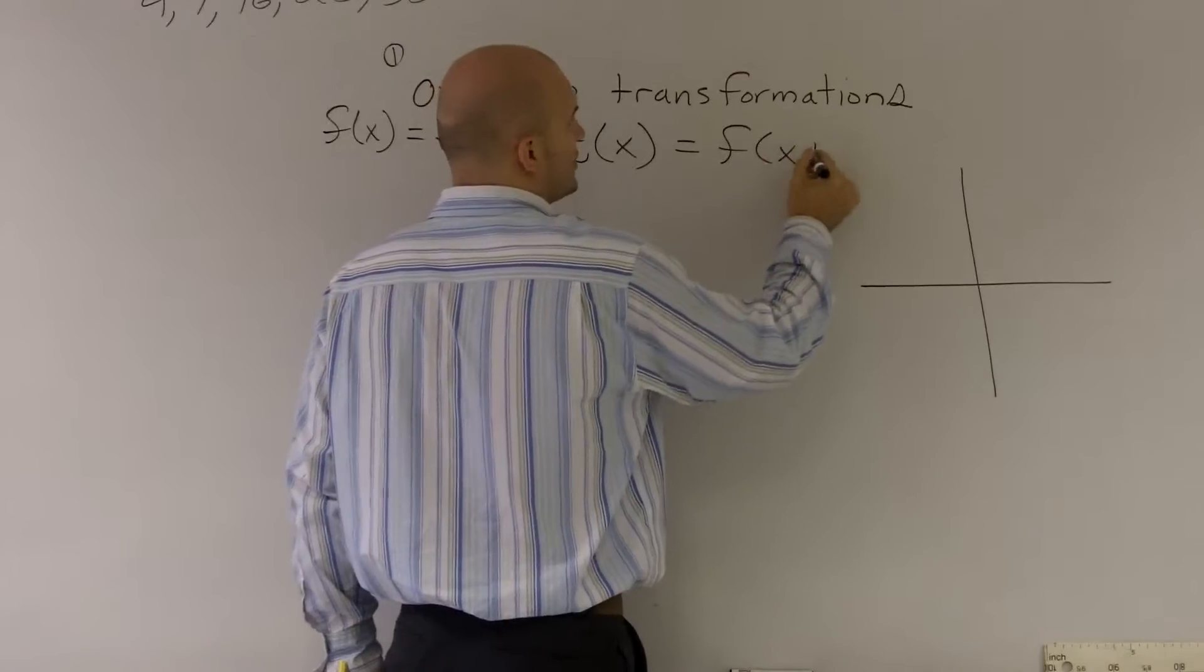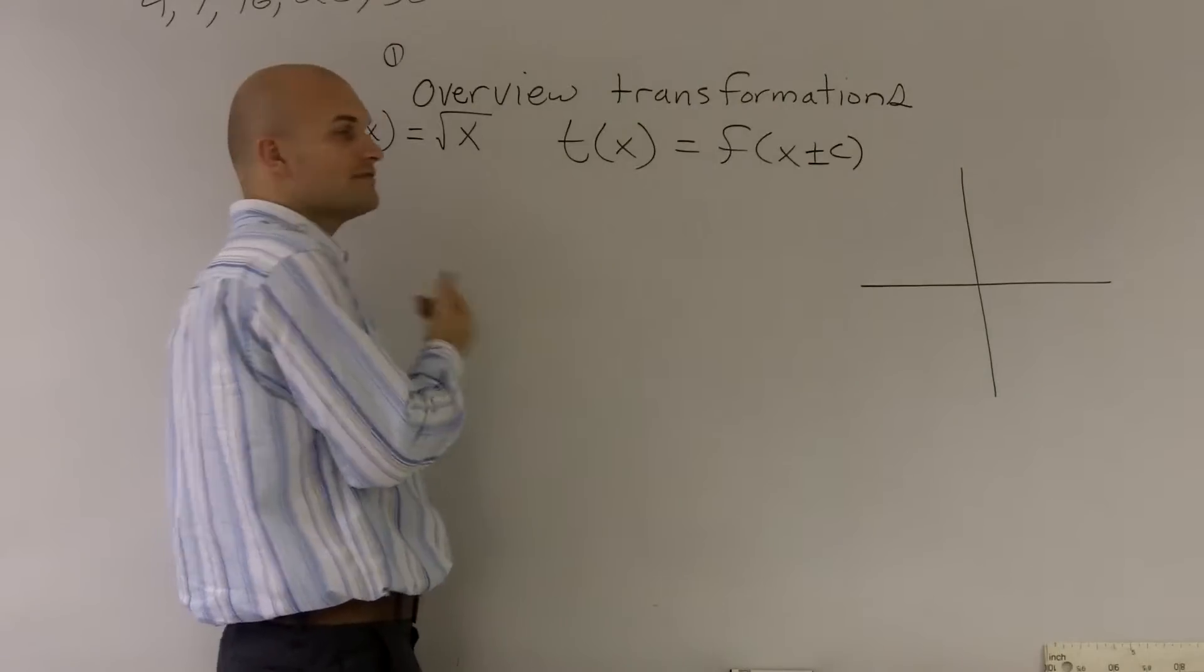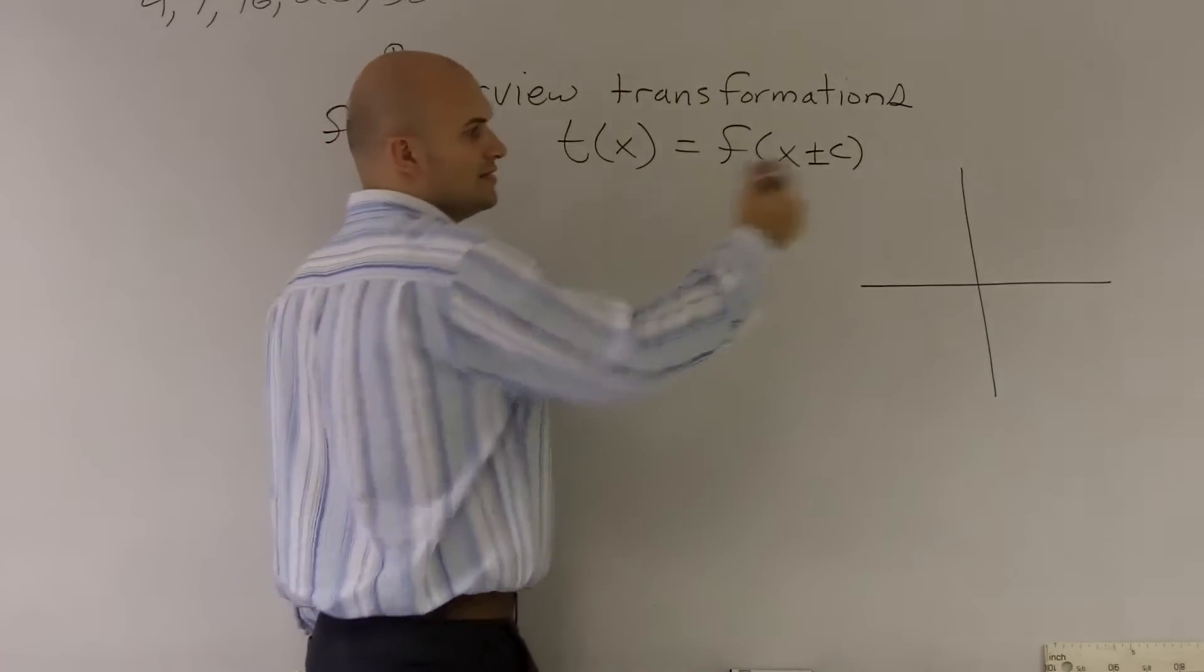And then we also looked at the horizontal, which was plus c means c units to the left, and negative c means c units to the right.